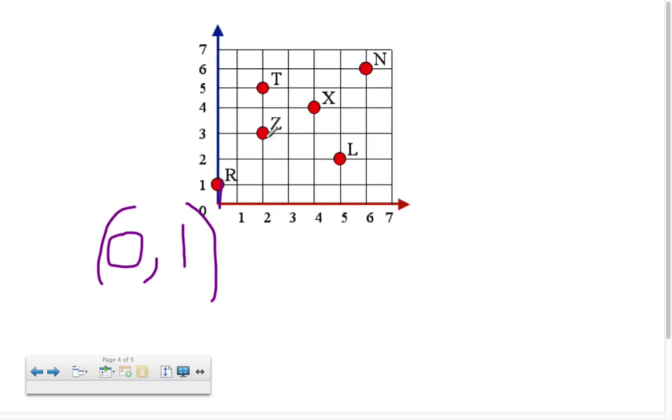How about for Z? Well for Z we move over 1, 2 and we move up 3, one, two, three. So that means 2 is first for the over. 3 is second for the up and down.